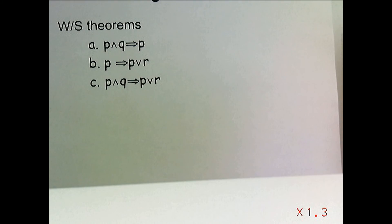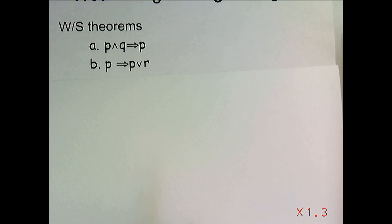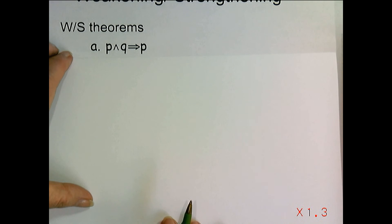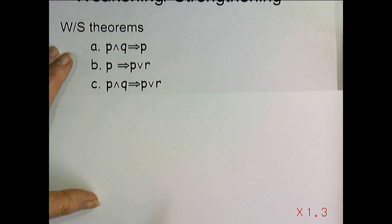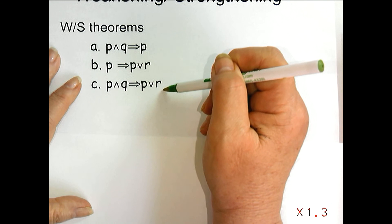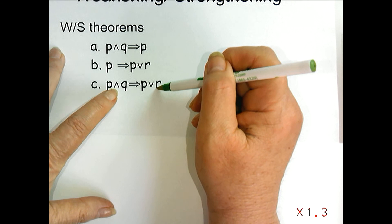These are called the weakening strengthening laws or weakening strengthening theorems. It turns out, any time we have p and q implying p, it's equivalent to true. Instead of using expression 1 and expression 2, I use p's and q's and r's. But if you have p implying p or r, it's always true. p and q implying p or r is always true. So if you have these special structures, it turns out the implications always hold, are always true.